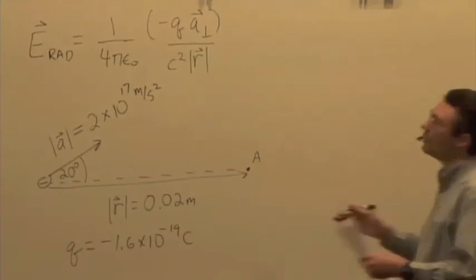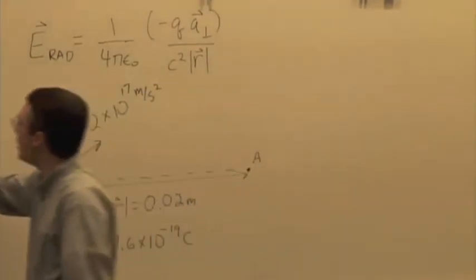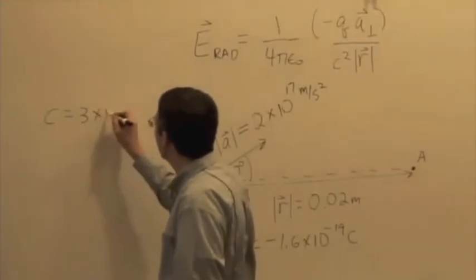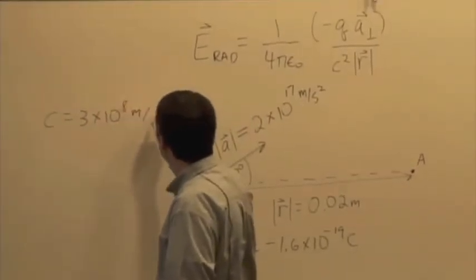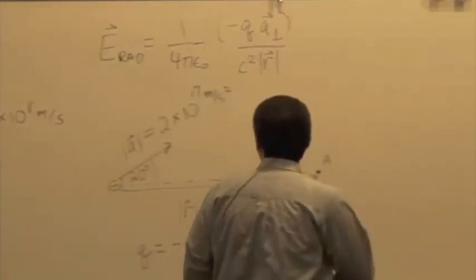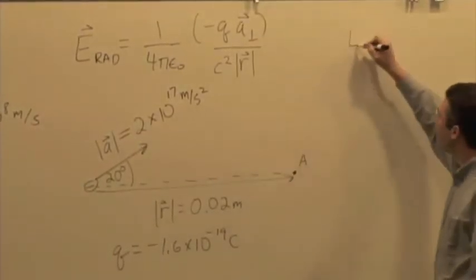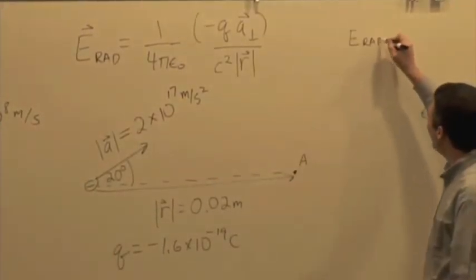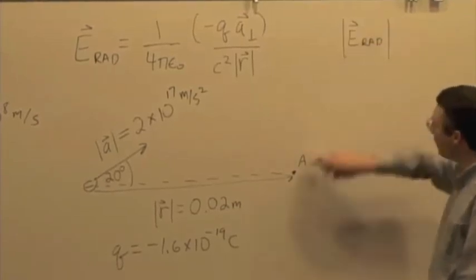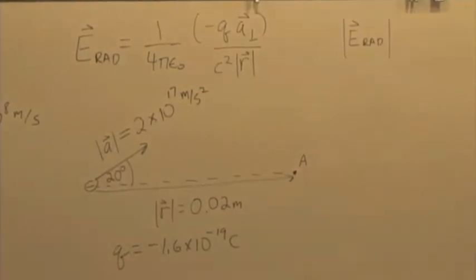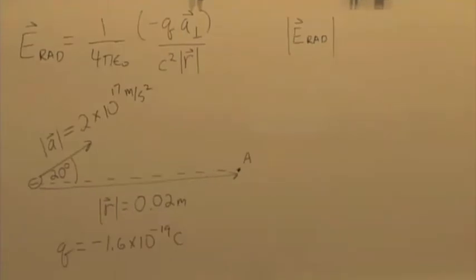So what else do we need? We've got everything, right? We know the speed of light. Speed of light is 3 times 10 to the eighth. So plug it in. See if you can find, based on this, see if you can find the magnitude of the radiative component of the electric field when it reaches location A. Remember, you need to use A perpendicular. So think about how you would calculate that.